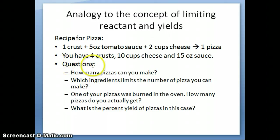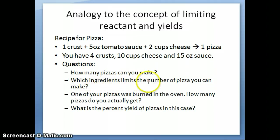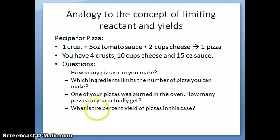There are several questions you can ask given this information. First, how many pizzas can you expect to make based on these ingredients? Second, which ingredient limits the number of pizzas you can make? Third, suppose one of your pizzas gets overbaked and burned in the oven — how many pizzas do you actually get? And lastly, what is the percent yield of pizzas in the case that you burn one?